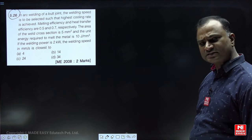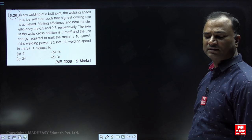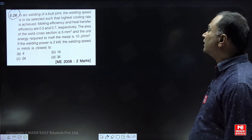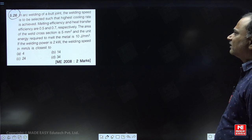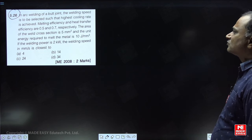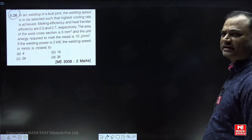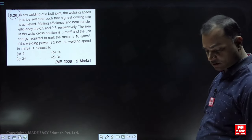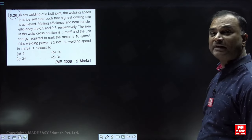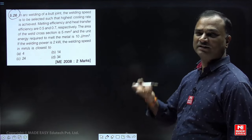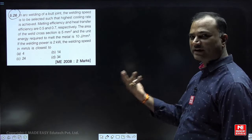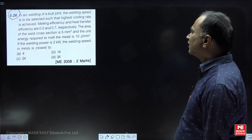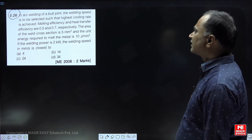Try to digest the question first — that is very, very important. In arc welding of a butt joint, the welding speed is to be selected such that the highest cooling rate is achieved. Because cooling rate is directly proportional to welding speed, more welding speed means more cooling rate. Melting efficiency and heat transfer efficiency are given.